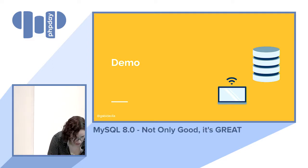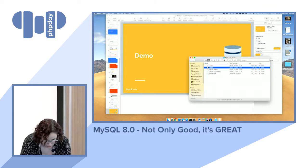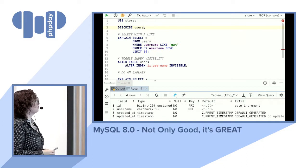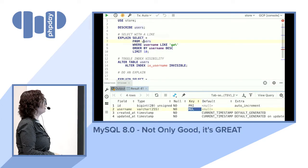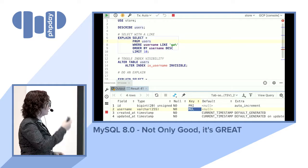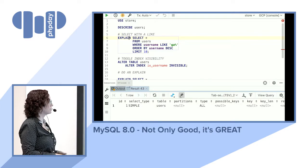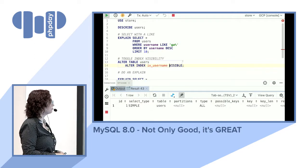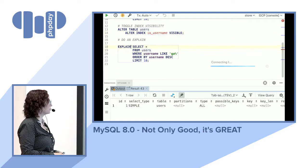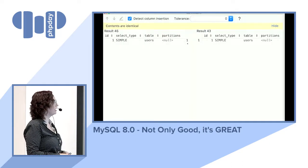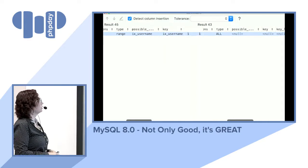Here's a demo of invisible indexes. I'm changing an index visibility to invisible, and running EXPLAIN shows 'type: ALL' — it's scanning the whole table with no key used. When I change it back to visible and run EXPLAIN again, the type changes to 'range' and the index 'ix_username' is being used. Just by changing visibility, the query cost went from 0.98 scanning one row to over 500,000 scanning all 5 million rows.